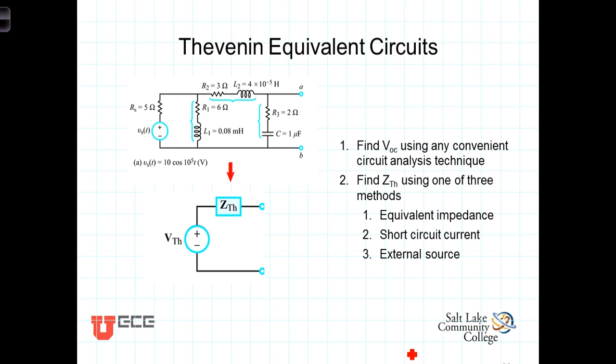You'll recall from our previous discussions on Thevenin equivalency, the idea was that if we had some relatively complicated circuit, and we were only interested in the terminal characteristics of that circuit, we could replace that circuit with its Thevenin equivalent, which consisted of a single voltage source and a single resistance called the Thevenin resistance.